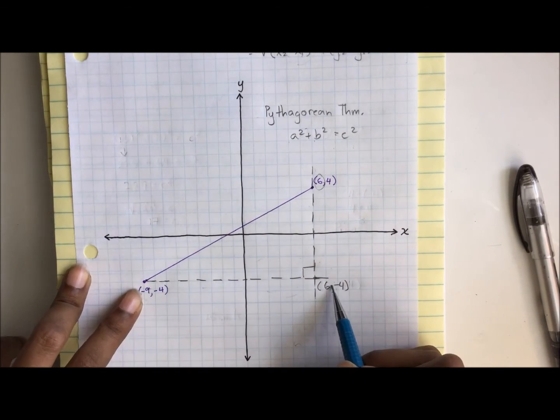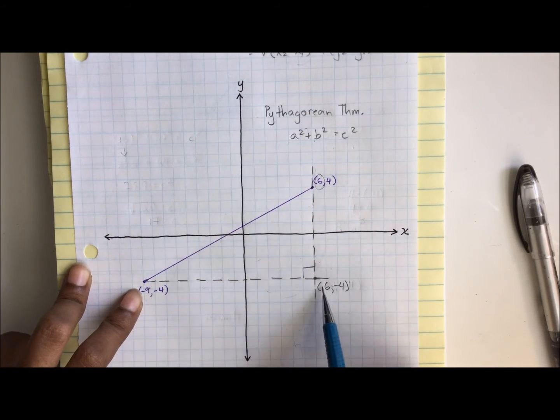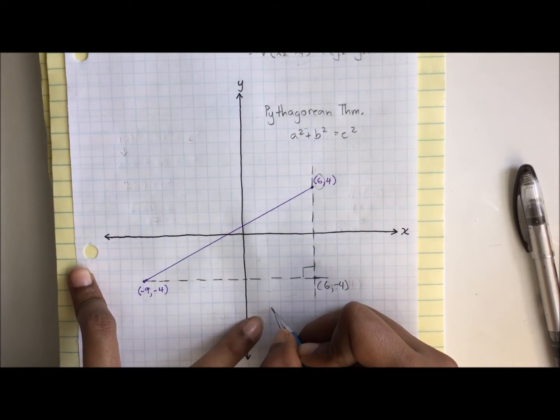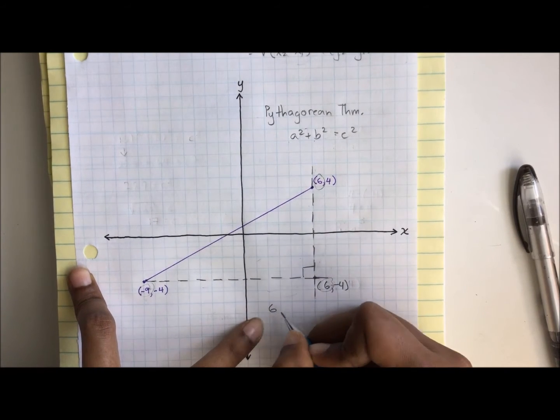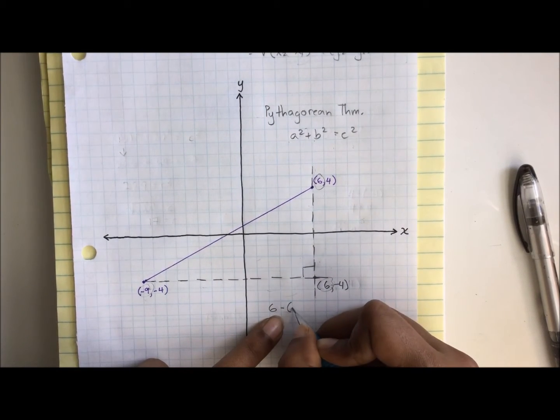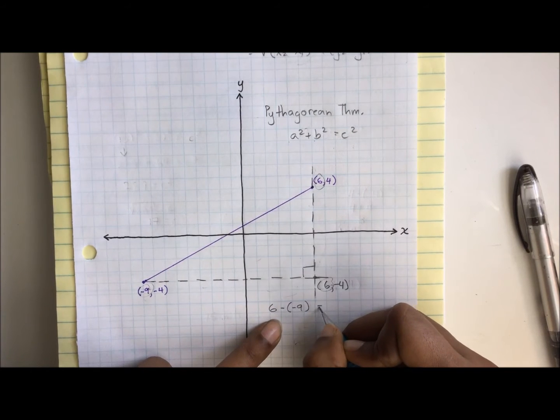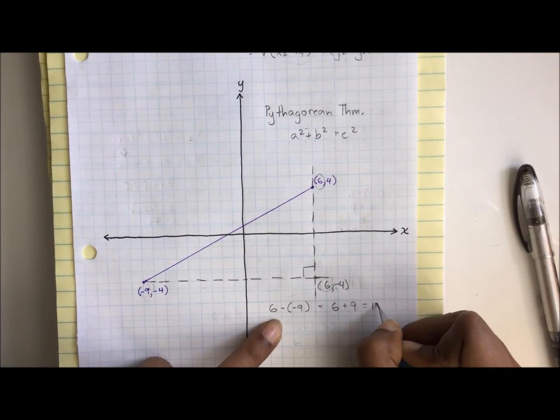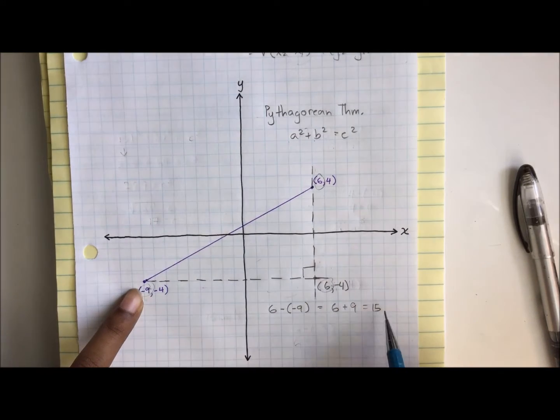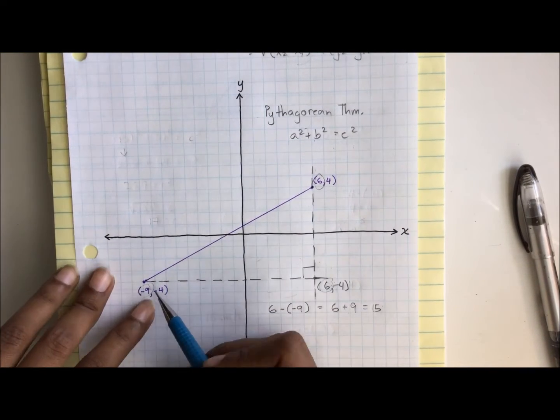Let's focus on the horizontal change. We go from negative 9 to 6. So what horizontal change was there? We can rewrite this using only the x's: 6 minus negative 9 equals 6 plus 9. That gives us 15. So the horizontal change was 15 units. Let's count it out to be sure.